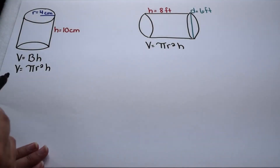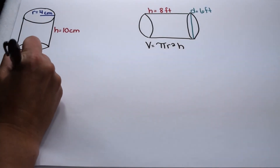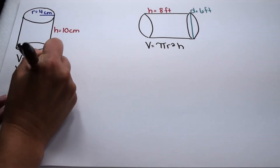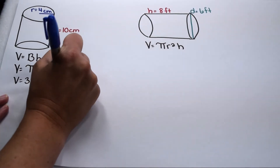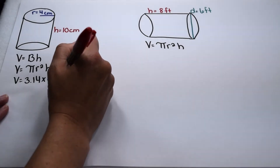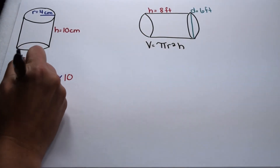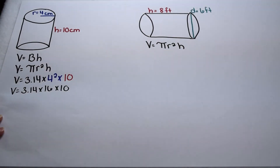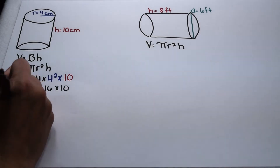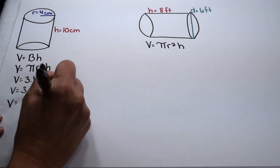Let's use our equation to find the volume of the cylinder. We know that volume equals pi times radius squared times height. If we look at our cylinder, we can see that our radius is 4 centimeters. So that means we have 3.14 times 4 squared, and we have a height of 10, so times 10. Order of operations tells us we need to do our exponents first. 4 squared comes out to be 16, so we have 3.14 times 16 times 10. 3.14 times 16 comes out to be 50 and 24 hundredths.